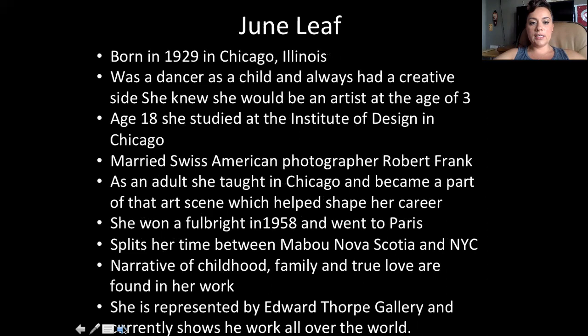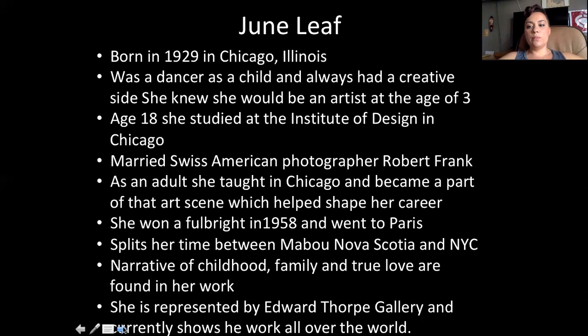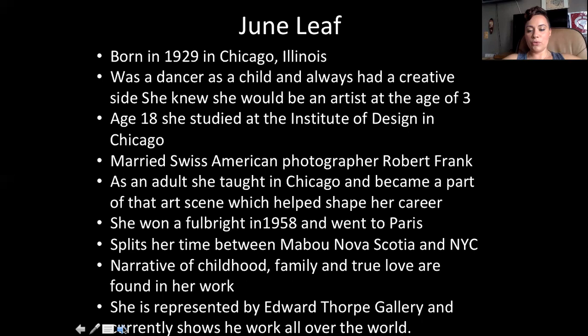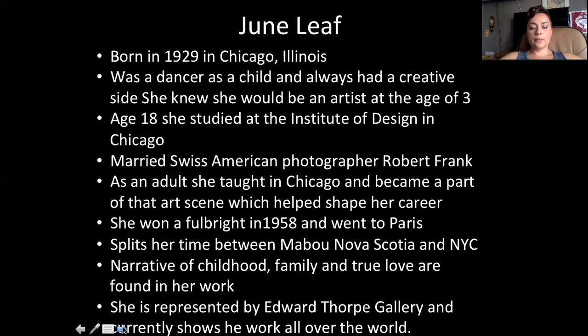June Leaf was born in Chicago, Illinois, in 1929. She was always a creative person — a dancer as a child — and she always knew she would be an artist. What's really interesting about June Leaf is that she doesn't just paint; she also sculpts, does wire sculptures, and invents things. She invents different kinds of glasses, like ones where you can only see the periphery, and makes creative little sculptures that are fine art but also very much inventions — she calls herself an inventor.